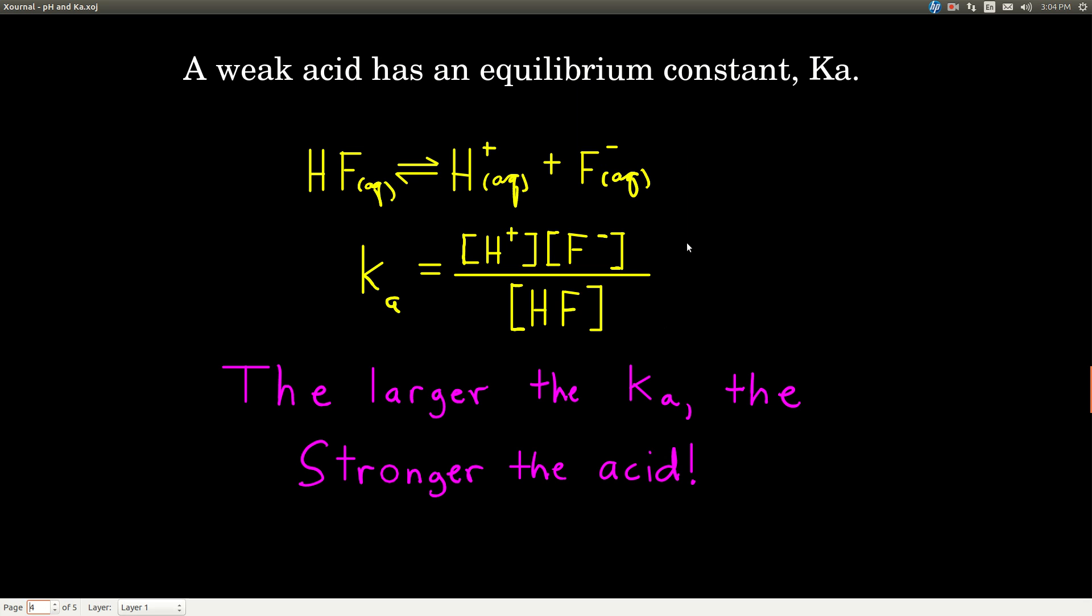Now, every weak acid, because it's an equilibrium situation, has an equilibrium constant, and we call that constant Ka, A for acid. So for example, hydrofluoric acid ends up as a weak acid, and the equilibrium looks like this.